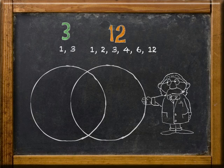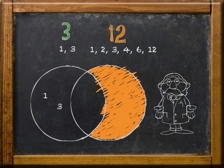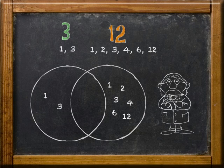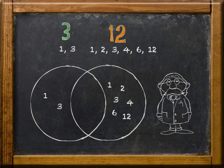The factors of one number go in the outer portion of the left circle, and the factors of the other number go in the outer portion of the right circle. Any common factors are brought into the overlapping section of the two circles. As you can see, the numbers 3 and 12 both share the factors of 1 and 3.